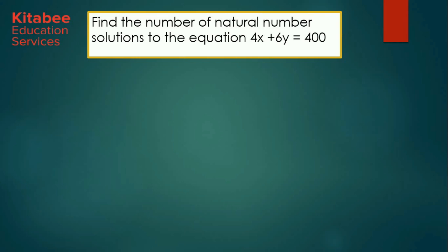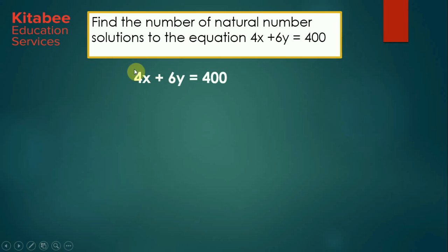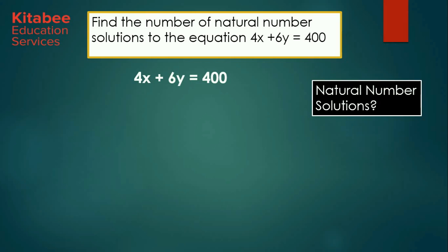Let us solve an example: find the number of natural number solutions to the equation 4x plus 6y equal to 400. Natural numbers are all integers starting from 1 — we exclude negative integers and 0. The coefficient of x is 4 and the coefficient of y is 6. However, these two numbers 4 and 6 are not co-prime to each other. So we must first make them relatively prime by dividing the equation by 2, giving us 2x plus 3y equal to 200.